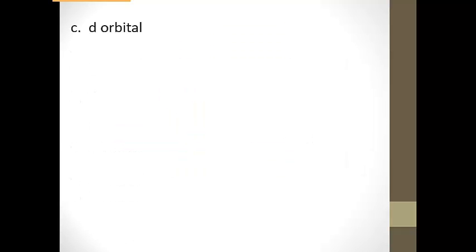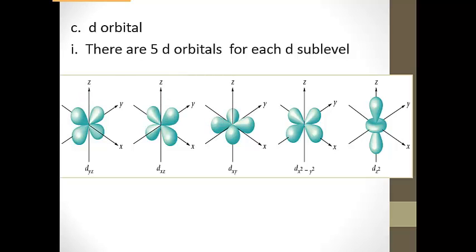When we got to the third energy level, we introduced the d orbital. And so the d orbital is, there are five different orientations or shapes for the d orbital. Most of them look kind of like the four-leaf clover, either on the x, the y, between the x and the y.